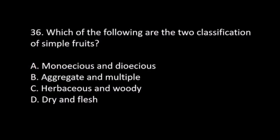Number 36. Which of the following are the two classifications of simple fruits? A. Monoecious and Dioecious. B. Aggregate and Multiple. C. Herbaceous and Woody. D. Dry and Fleshy. The answer is D. Dry and Fleshy.